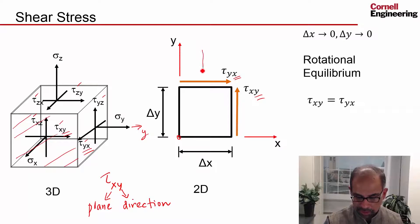Now you also have to consider the moment due to the normal stresses, but they will cancel. The moment created by this will cancel that in the limit as the dimensions tend to 0, and that's how you get tau xy equals tau yx.